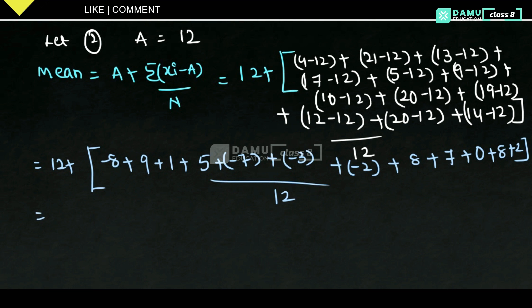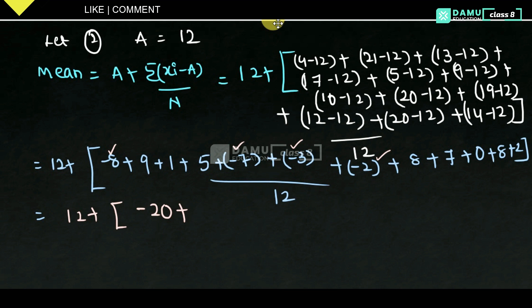So: the negatives are minus 8, minus 7, minus 3, minus 2, giving minus 20. The positives: 9 plus 1 is 10, plus 5 is 15, plus 8 is 23, plus 7 is 30, plus 8 is 38, plus 2 gives 40. So 12 plus 40 minus 20 over 12, which is 12 plus 20 by 12.